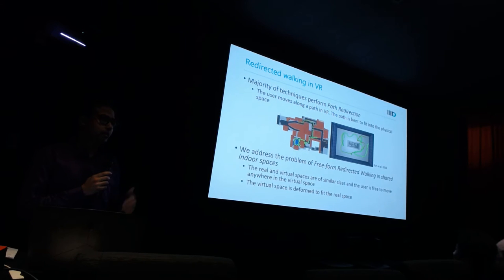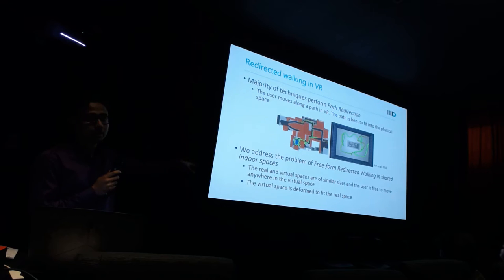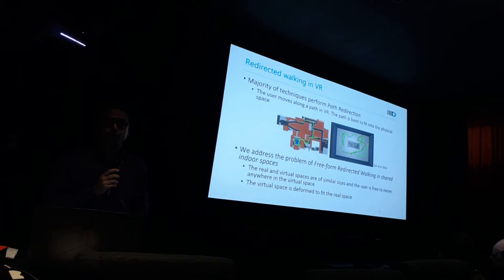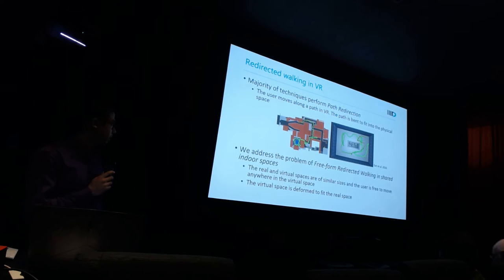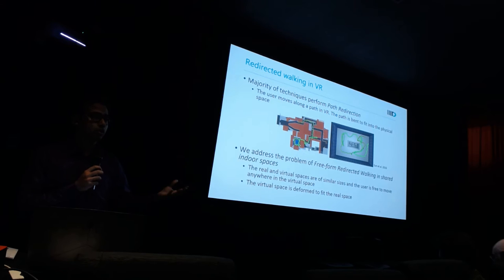Most redirected walking is done through direct redirections. Here is an example from Steinicke — on the left of the image you can see how they have moved in VR, but in physical space they have been just cycling around in a large room. In our method, what we are trying to do is to use free-from redirection, so they don't go in rounds. What we have done is to bring actual physical spaces together. Two physical spaces are of similar size, but it's a shared space — more about collaboration and bringing people into each other's space.